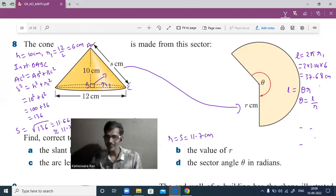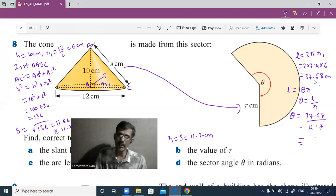We found the radius and the length of the arc so that we can find the angle of the sector. Theta equals 37.68 divided by 11.7, which is the radius. The angle of the sector is the angle made by this arc at the center of the circle.